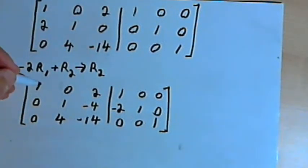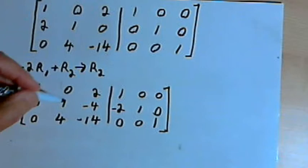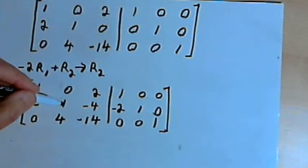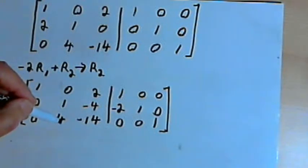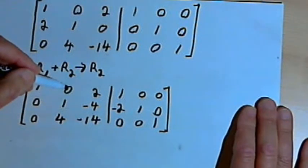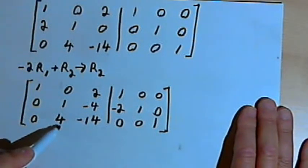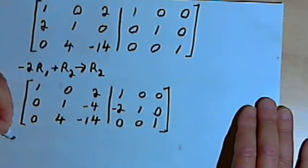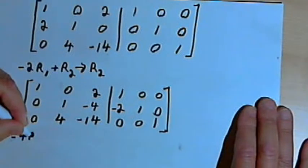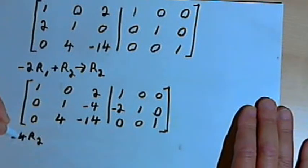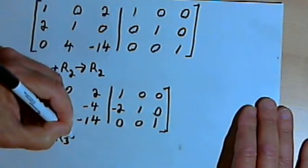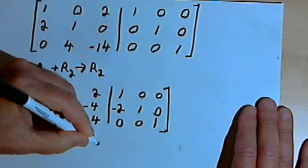Now I want to go on to the second column. In the second column I want a 1 in the second row, second column, and I want everything else in that column to be zeros. I've got a 0 above that 1, but I've got a 4 below it. So I want to take the second row and multiply it by negative 4 — negative 4 times row 2 — and add that to row 3, making it the new row 3.